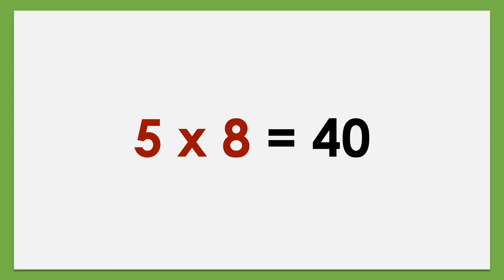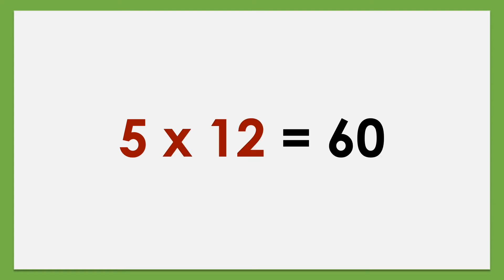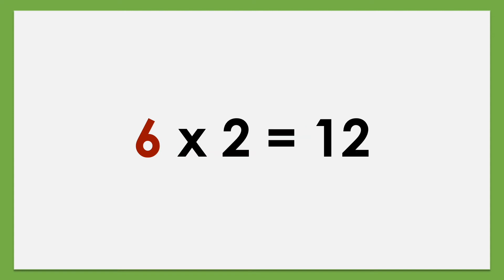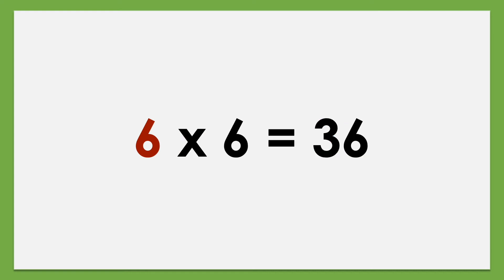5 times 8 equals 40, 5 times 9 equals 45, 5 times 10 equals 50, 5 times 11 equals 55, 5 times 12 equals 60. Set of 6: 6 times 1 equals 6, 6 times 2 equals 12, 6 times 3 equals 18, 6 times 4 equals 24, 6 times 5 equals 30, 6 times 6 equals 36.